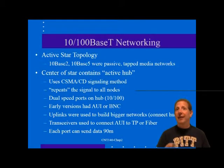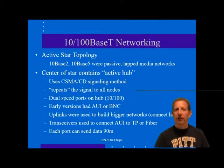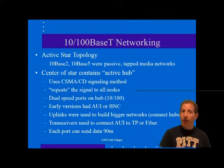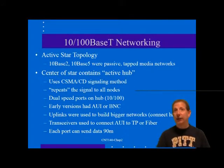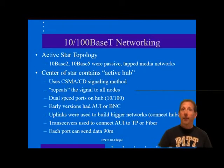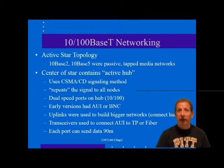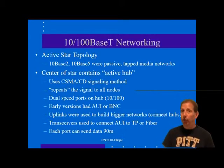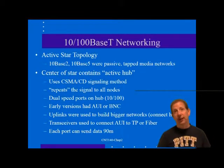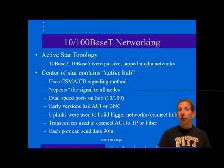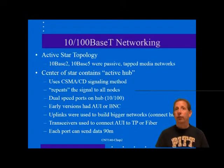A significant difference between 10/100T and Ethernet coax topology is the addition of an active hub device. 10/100T still uses CSMA/CD signaling. With Ethernet coax, any transmission by a station is passively distributed by the coax cable to all other connected stations. In 10/100T, however, a transmission by a workstation first goes to the hub, which then repeats and retransmits the signal to all other connected stations — each port thus acts as a transceiver.